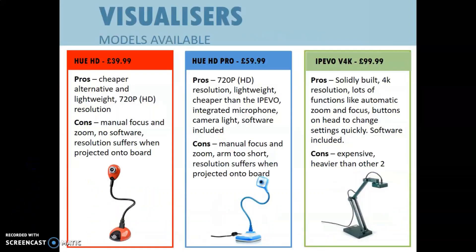The three are: two from Hue and the ipevo v4k. My personal preference is the ipevo. Yes, it is very expensive at $99.99, especially for certain science departments and individuals. However, at 4K resolution and with all the functions it has, like automatic zoom and focus, it does make doing demos and various things a lot easier than the Hues.